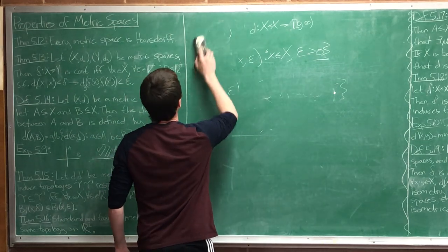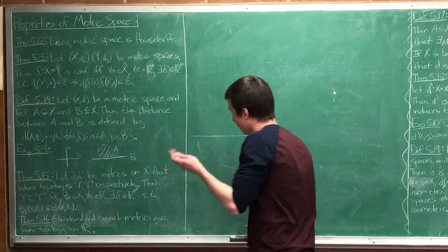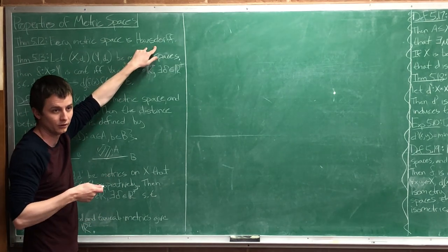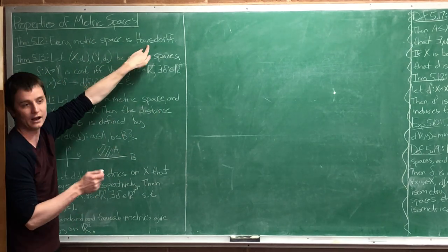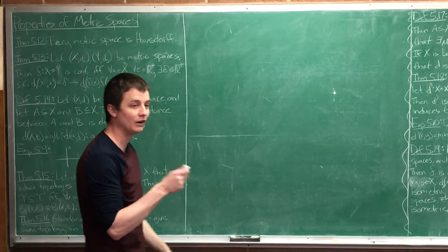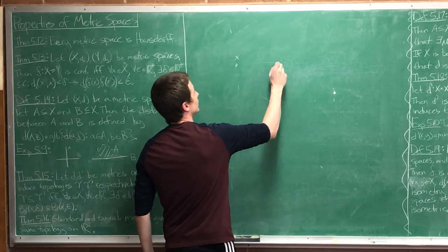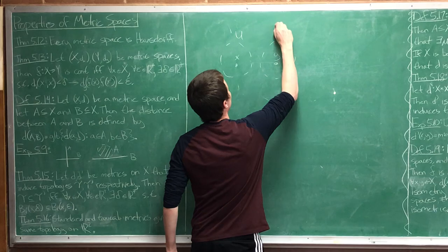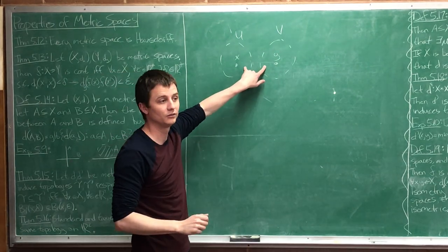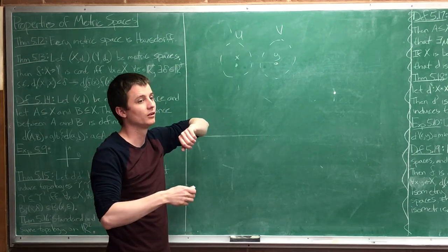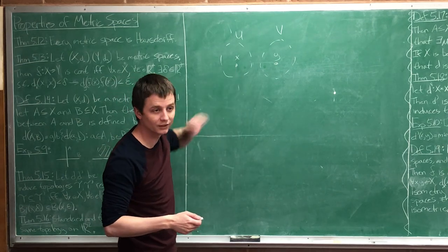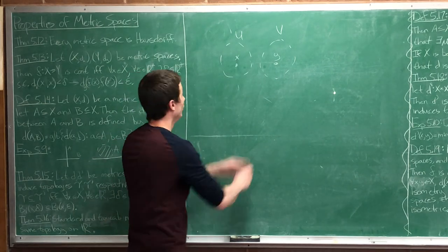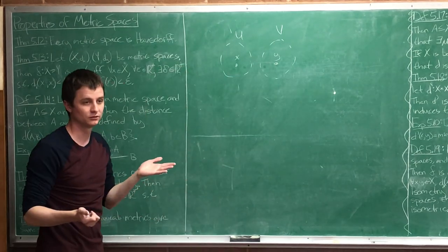Let's hop back into what we were actually proving. Every metric space is Hausdorff. We use a metric space to generate a topology - we're saying that topology is Hausdorff. Hausdorff means: if I have two points X and Y in my topology, then there exist separate neighborhoods U and V such that those neighborhoods don't intersect. A neighborhood is just an open set containing the point. Pick two points, find two open sets containing those points that don't intersect - that's Hausdorff.